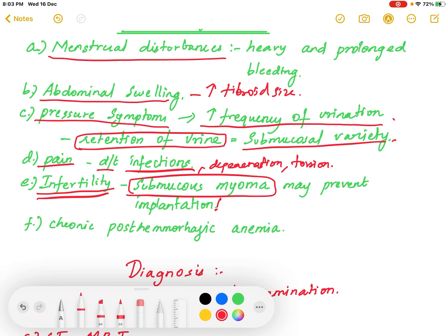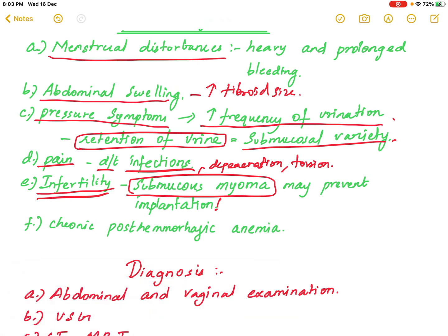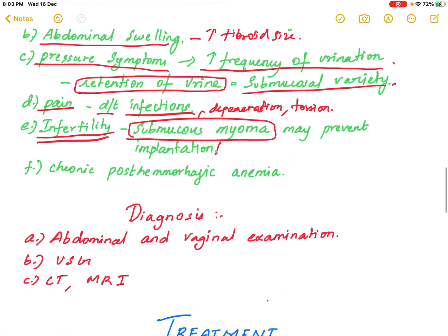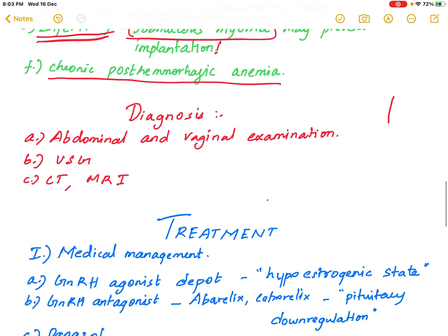Due to increased bleeding, patients develop chronic post-hemorrhagic anemia. For diagnosis, imaging modalities are primarily used, along with abdominal and vaginal examination.